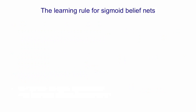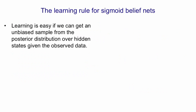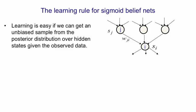Before I go into ways in which we can try to get samples from the posterior distribution, I just want to tell you what the learning rule is if we could get those samples. So if we can get an unbiased sample from the posterior distribution over hidden states given the observed data, then learning is easy. Here's part of a sigmoid belief net, and we're going to suppose that for every node we have a binary value. For node j, that binary value is sj, and that vector of binary values is a global configuration for the net, which is a sample from the posterior distribution.